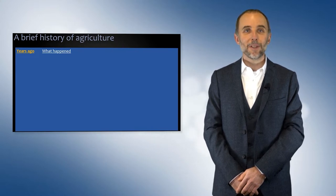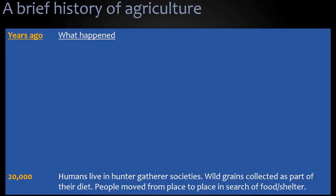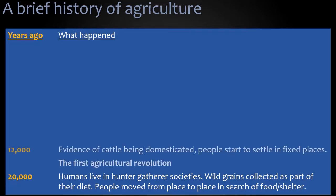We're going to look at 20,000 years in one slide. Going back 20,000 years ago, humans did not live in settlements. We lived in hunter-gatherer societies. Animals would have been hunted, and wild grains would have been collected as part of the diet. People moved from place to place in search of food and shelter.